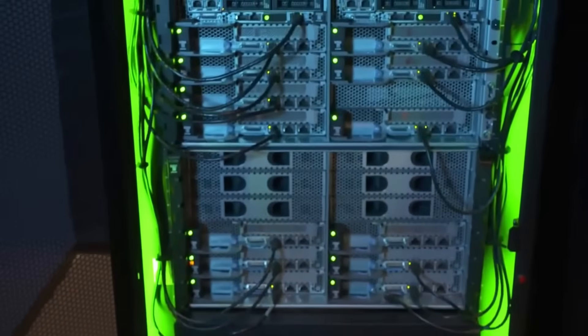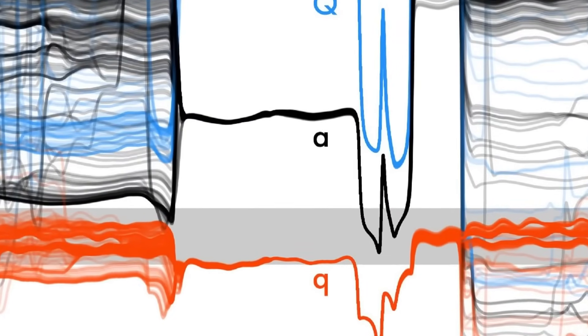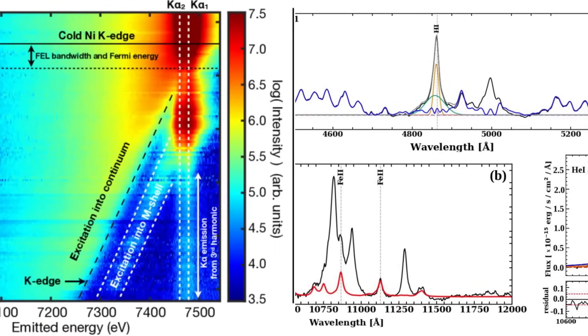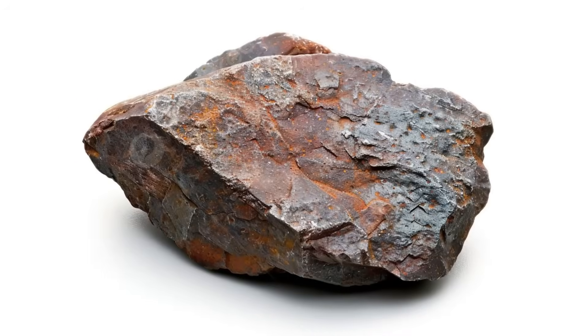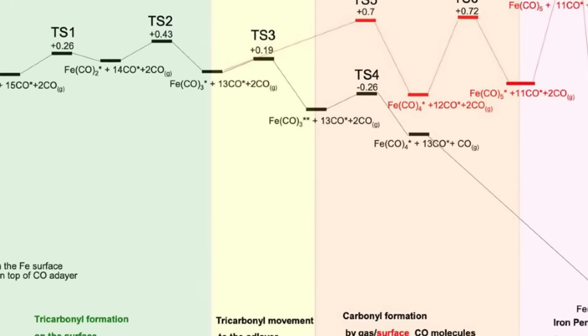In normal comets, iron and nickel exist in lockstep, forged together in ancient supernovae and planet-building processes. The Sun itself contains roughly 18 atoms of iron for every one atom of nickel. Even the dustiest, most metal-rich comets we've studied never show nickel outweighing iron by more than a factor of two.